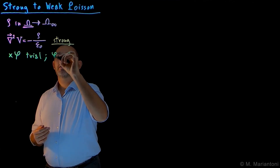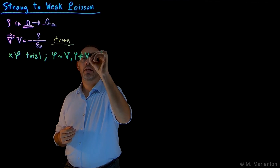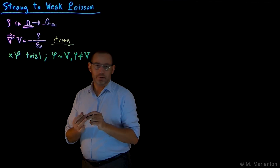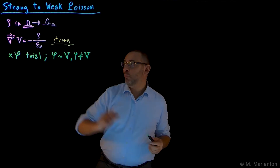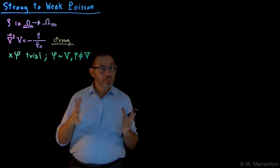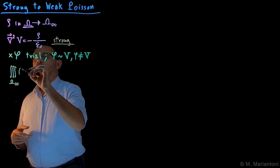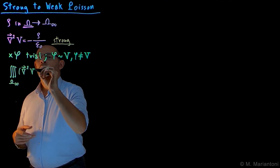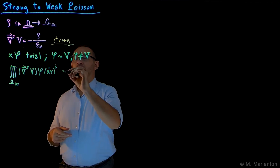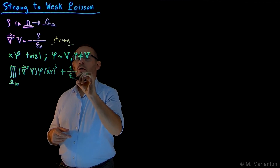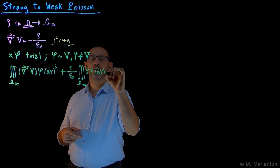Remember that var phi has a similar structure as capital V — the electrostatic potential — even though technically var phi is generally different than capital V. But it retains some of its properties; for example, if V goes to zero as 1/r at infinity, also var phi will go to zero as 1/r. By doing so and performing this integration — which is the weak formulation — the integral smoothens things, and we end up having the volume integral in the region capital omega extended to infinite of the scalar Laplacian of V times the trial function var phi, integrated over d³r, plus one over epsilon naught times the integral of rho times var phi over d³r, equal to zero.